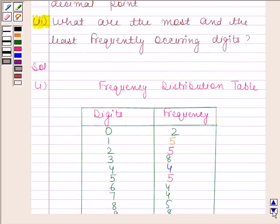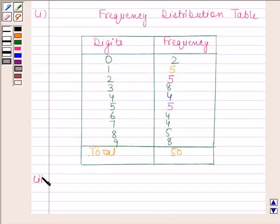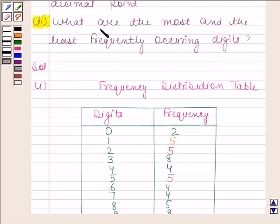Let's now do the second part. In the second part, we have to find what are the most and the least frequently occurring digits.